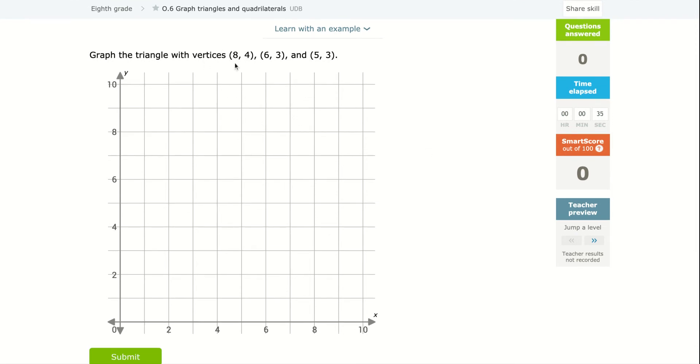So again, all you need to make sure you remember is that the first number in an ordered pair is your X or your horizontal position. So that eight here means I'm going to go over eight, but then I'm also going to go up four because the second number is my vertical placement. So I go up four. So that point is this first point, eight, four.